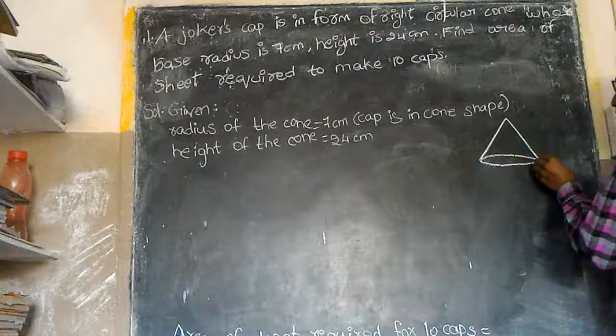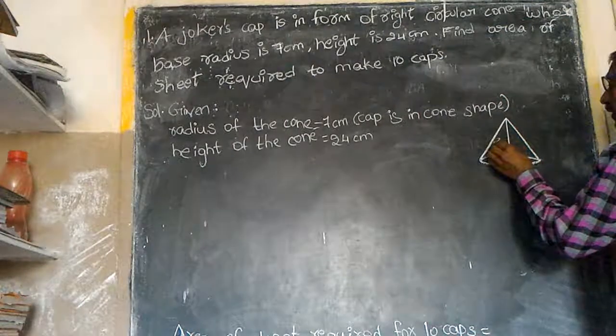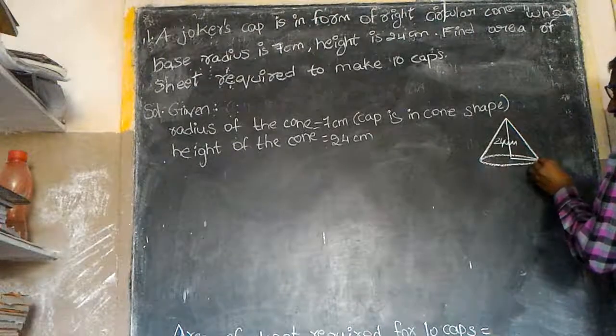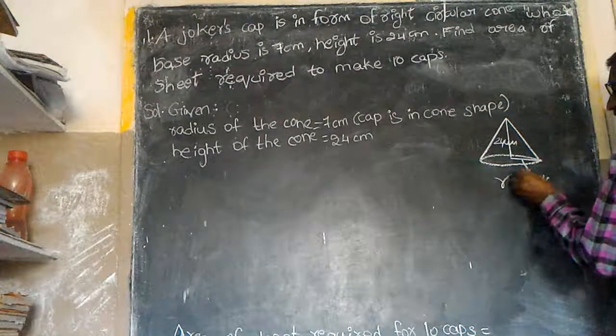This is my cone, this is my height. Height 24 cm, radius 7 cm. This is equal to R.